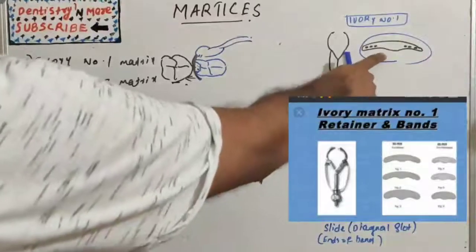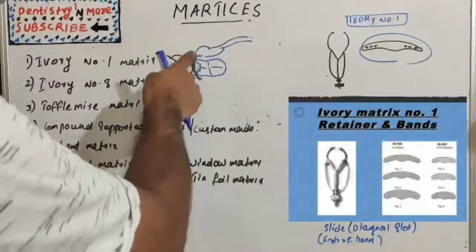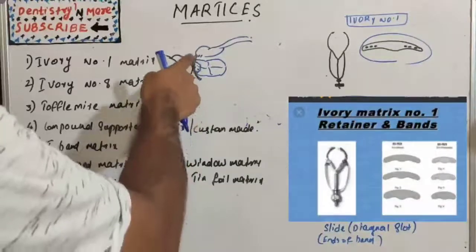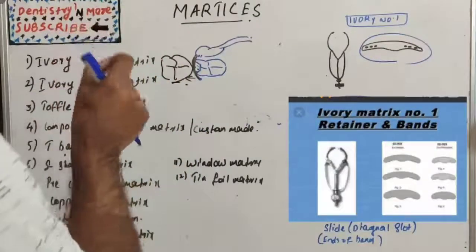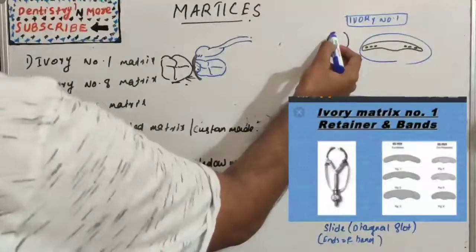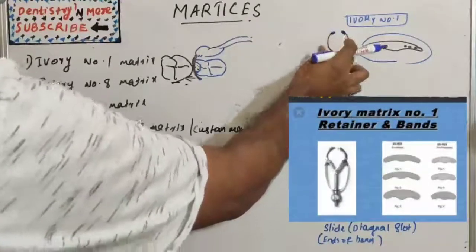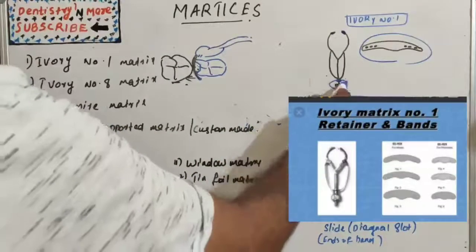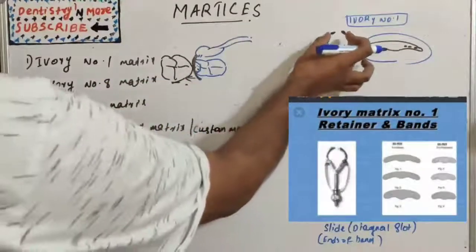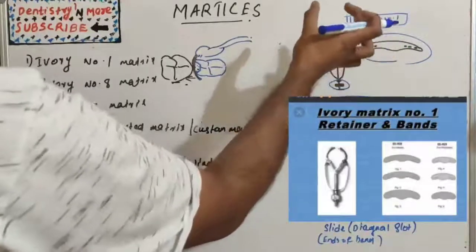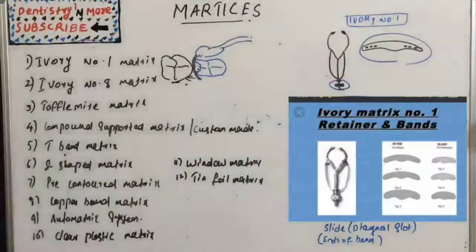Ivory number one matrix consists of a stainless steel band which encircles one proximal surface of a posterior tooth. This band is attached to the retainer via a wedge-shaped projection, and there is an adjusting screw at the end of the retainer which adapts the band to the proximal contour of the prepared tooth. The retainer can be adjusted by turning the screw clockwise or anticlockwise.